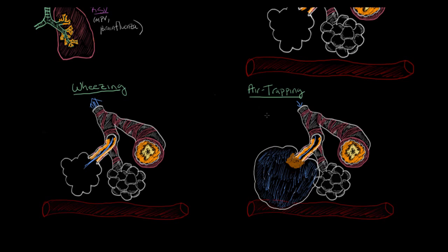If it gets really bad, air trapping can actually present as a physical exam finding in that the child's chest appears larger than normal, and it's also visible on chest X-rays in the form of hyperexpanded lung fields. As this happens, the alveoli are still trying to exchange oxygen between the environment and the blood. But because of this one-way phenomenon, the old air isn't able to get out of the alveoli, and you get a mixing effect. This results in a decreased oxygen concentration in the alveoli, so not as much oxygen is exchanged and transported into the blood. This decrease in oxygen in the blood is known as hypoxemia.